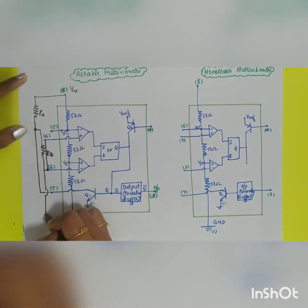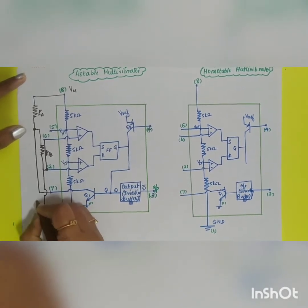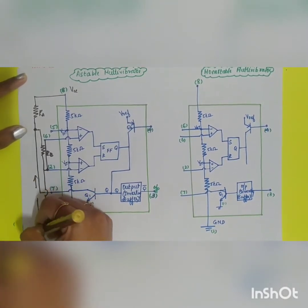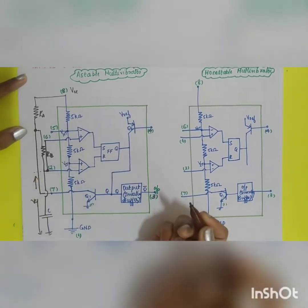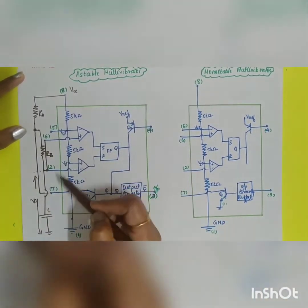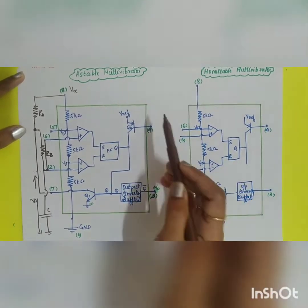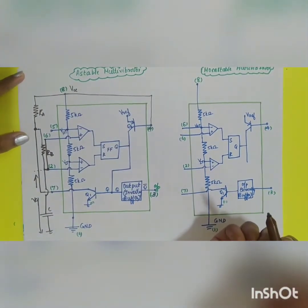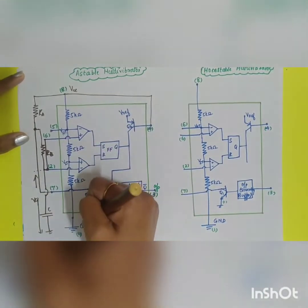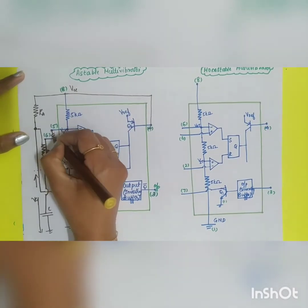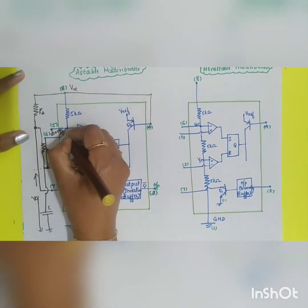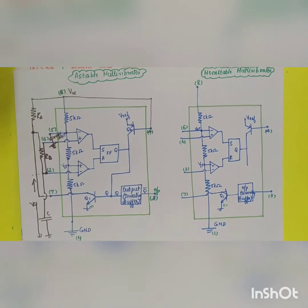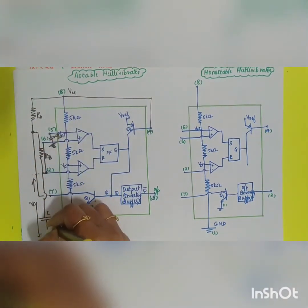From the junction of RB and pin 6, capacitor C connects to ground. Pin 4 (reset), when not used, must be connected to VCC. Pin 1 goes to ground. Across pin 5, a 0.01 microfarad capacitor is connected to ground. These are the modifications for the astable multivibrator: two resistors RA and RB, and capacitor C.